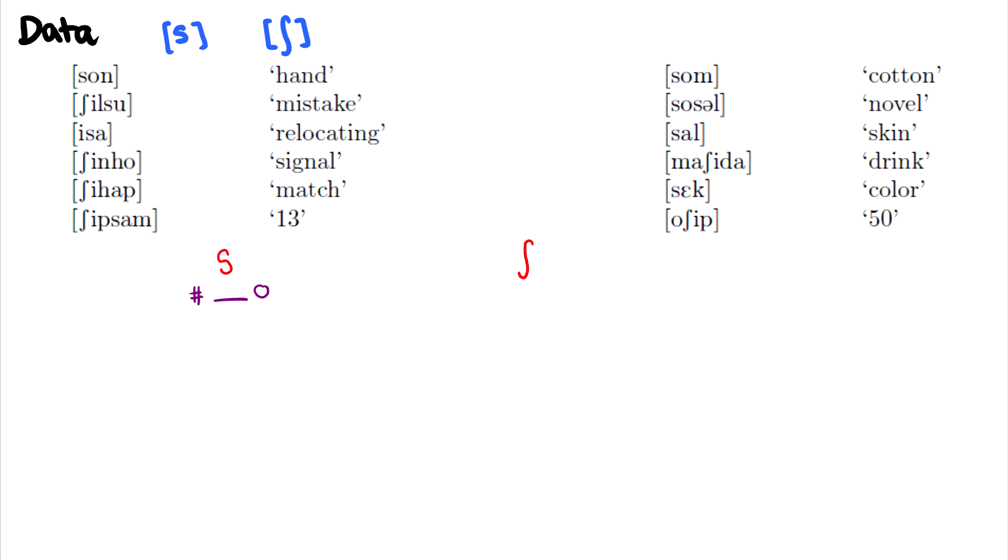In the word shilsu, we see an l before the s and then a u afterwards. In isa, we see an i before it and an a after. And we'll just continue going through this word by word.